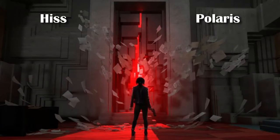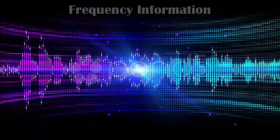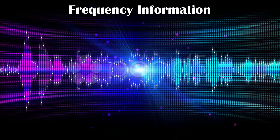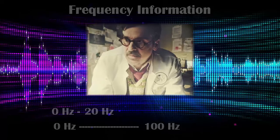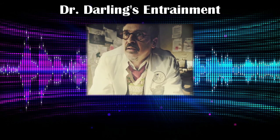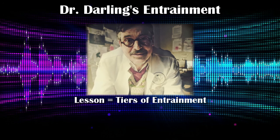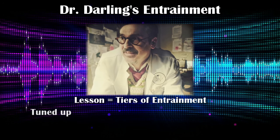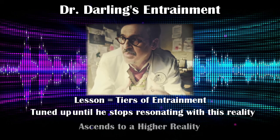Dr. Darling refers to the Hiss as viral and invasive, while Polaris is benign. It is theorized that higher frequencies allow for more information to be received — at 20 Hz you have access to information from 0 to 20, but at 100 Hz you have access from 0 to 100. Dr. Darling's story reflects this theory, as he gains a better understanding with each lesson Hedron releases to him. With each lesson his psyche is effectively tuned up to a higher frequency. Eventually, he ceases to exist here and ascends to a higher plane of consciousness.